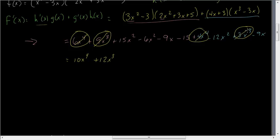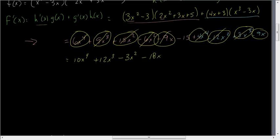I've got x squareds now. So I have 15x squared, negative 6x squared, and a negative 12x squared. 15 minus 6 is 9, minus 12 is negative 3x squared. Those are done. I have a negative 9x. I have a negative 9x for a negative 18x. Those are done. And then a negative 15. OK. So now, if we compare this to what we got when we expanded the original, then took the derivative, they should be the same.